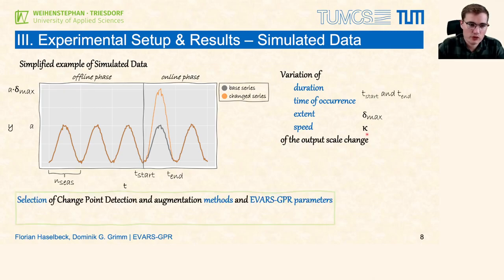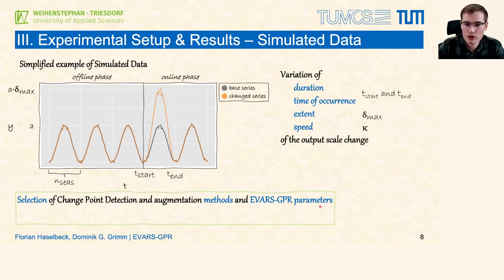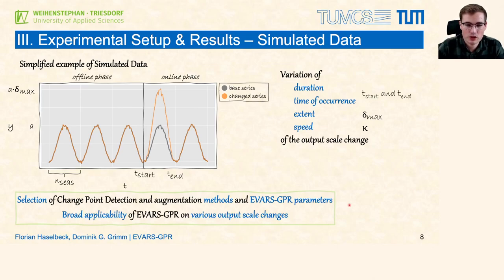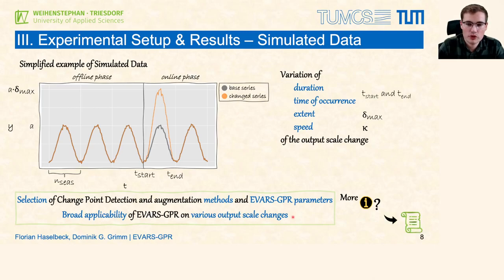So in summary, we were able to vary the duration and time of occurrence via t_start and t_end, the extent via delta max, and the speed via the slope parameter kappa. In total we simulated various scenarios to select the online change point detection and the augmentation method, and to parametrize the whole pipeline. We experienced a broad applicability of EVOS GPR on further experiments with various different output scale changes. For more information please see our paper or feel free to contact us.